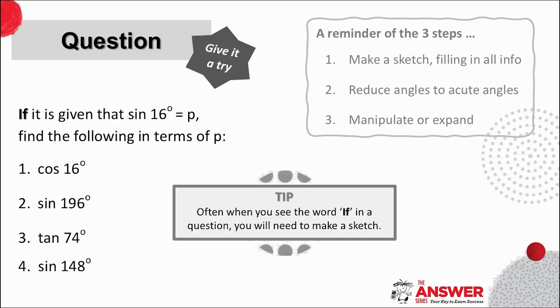Okay let's dive straight into an example. The question here says if it is given that sin 16° = p, find the following in terms of p. Just a side note, this question begins with the word if which often means you need to make a sketch. Then firstly we take note that the given acute angle is 16 degrees. We've popped in here a reminder of the three action steps to follow but before you give this question a try take a moment to look at what possible angles could show up.